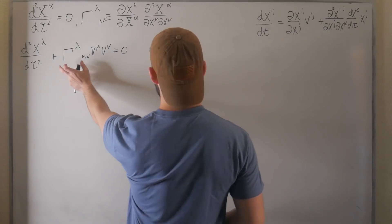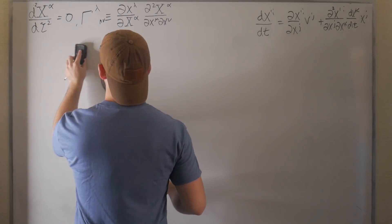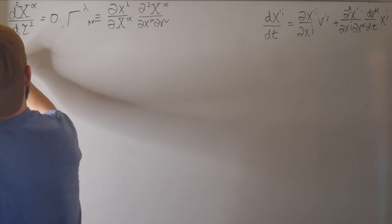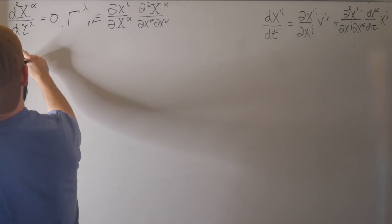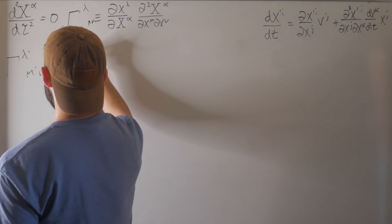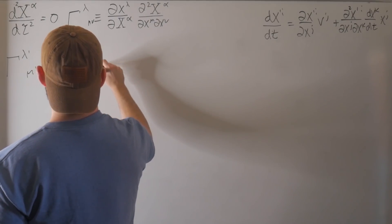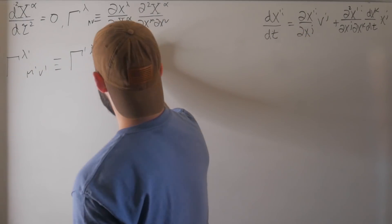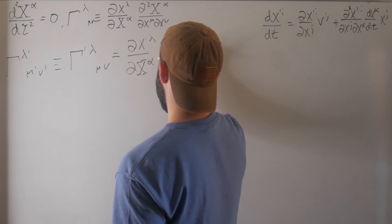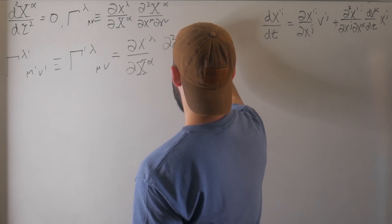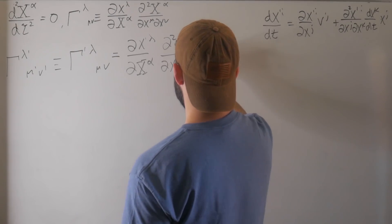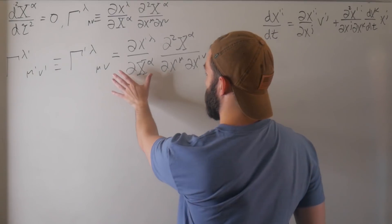We're going to keep the x-alphas the same — the person still jumping out of the plane. But we want to know how the affine connection that connects x-alpha to x-prime-mu relates between two different observers. By understanding how they transform, we'll find out if it's a tensor or not. So let's start out in some primed frame. We have gamma lambda-prime mu-prime nu-prime, which I'll write as gamma-prime lambda mu nu, and this equals dx-prime-lambda over dX-alpha, times dx-alpha over dx-prime-mu, times dx-alpha over dx-prime-nu.